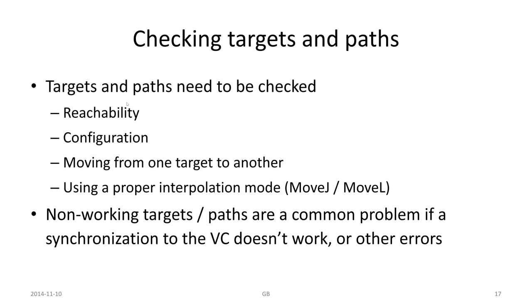Usually, if we have a non-working target when moving from one target to another using move linear, it might be a problem with the configurations. In those cases, we can check the configuration, but I would recommend to switch to move joint if possible. If we are just moving in space as a via position, that is the proper way to use move J.